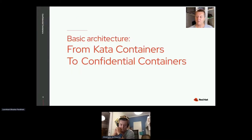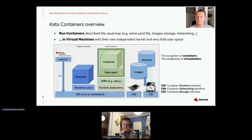Let's talk about the basic architecture of Kata containers and how we can move from Kata containers to confidential containers. Kata containers is designed to run containers described the usual way — with the same APIs, the same YAML manifest files, the same container image formats, the same volume storage, the same networking — but now we want to run them in virtual machines with an independent kernel and very little user space to reduce the attack surface, basically just a Kata agent that starts the container and monitors it. We benefit from the ecosystem of containers with the additional sandboxing provided by virtualization.